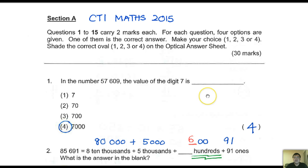This is the recent examination collection for mathematics CT1. Now, in the number 57609, the value of the digit 7 - it's over here - it's 7000. It's not 70,000 or 770. So this is the answer: number 4.